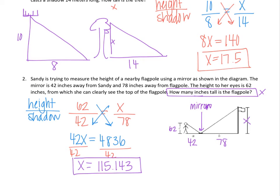So I found the height of the flagpole to be 115.143. It does not say to round to any particular decimal place or to any whole inch, so we're just going to leave it as .143.